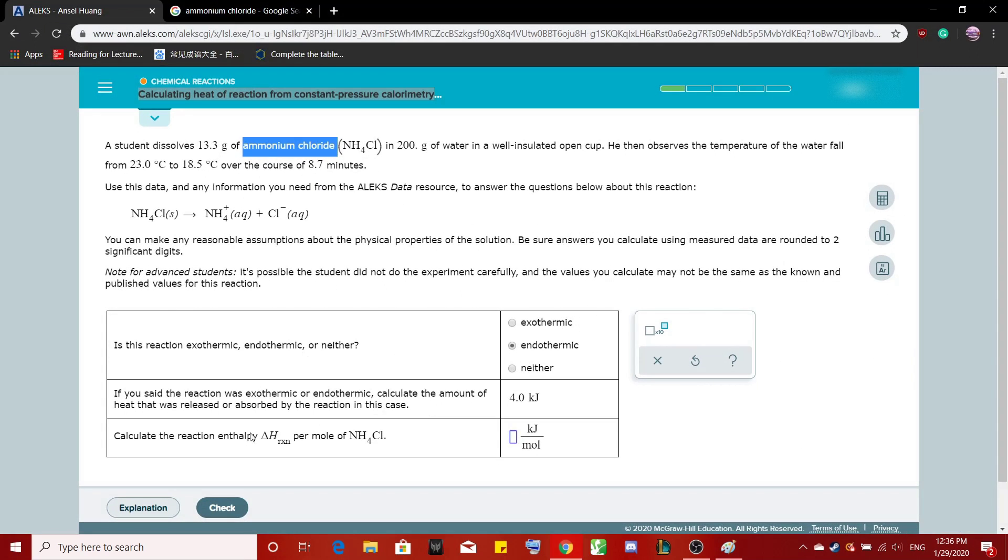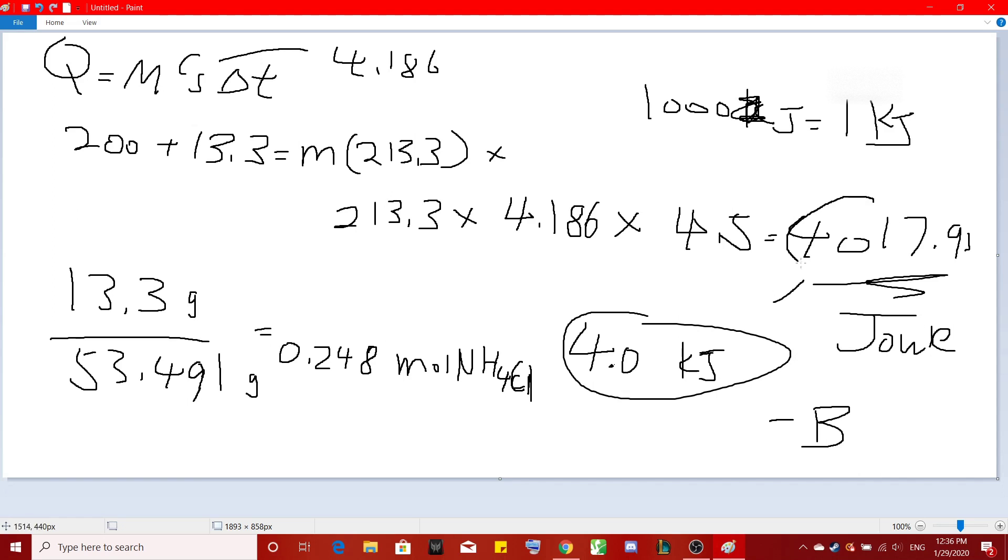And continue on. We need to calculate the reaction enthalpy per kilojoule per mole. So this is what we did. We take this value, the joules value, and we divide it by the moles. 4,017.9 divided by 0.248. You get this much.